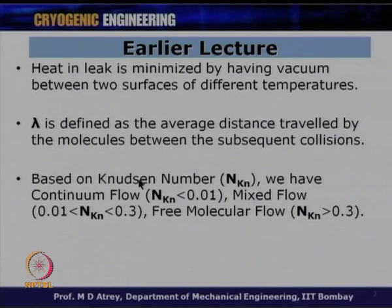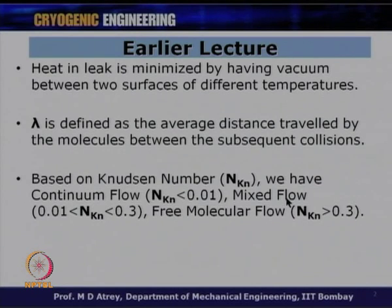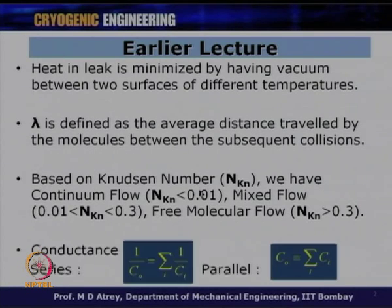Based on the Knudsen number — analogous to the Reynolds number in continuum flow — defined as lambda divided by d (where d is the characteristic dimension), we classified flow regimes: continuum flow when Knudsen number is less than 0.01, mixed flow when it is between 0.01 and 0.3, and free molecular flow when it is greater than 0.3. In very good vacuum, we always encounter free molecular flow.